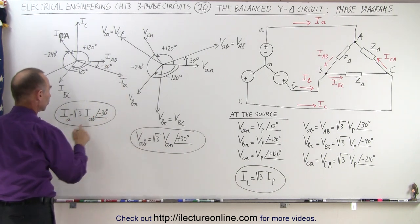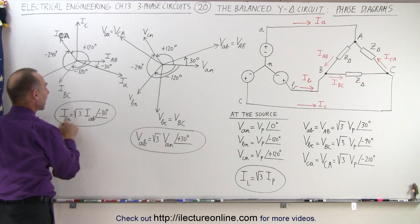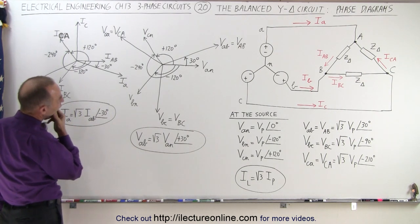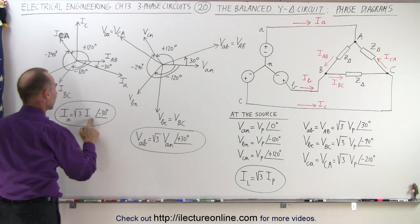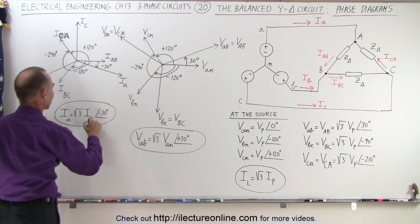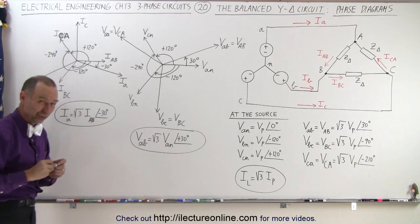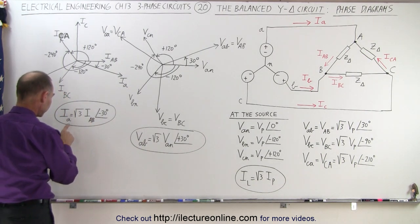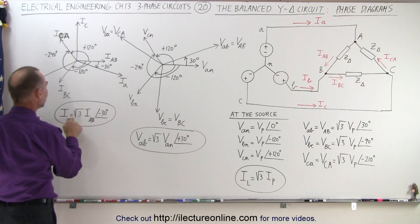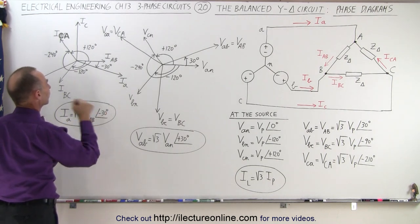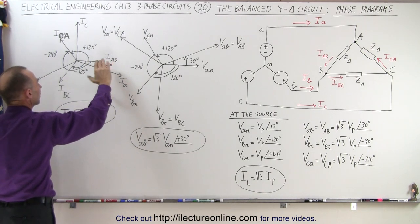So the proper relationship between the line current IA and the phase current IAB is... I guess I shouldn't use small letters here, I should use big letters AB. It doesn't matter there, but it does matter here, so we should use big letters. So the line current IA is equal to the square root of three times the phase current IAB with a lag angle of 30 degrees, which is evident when we compare it right here.